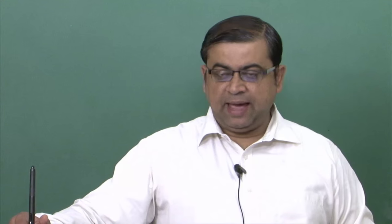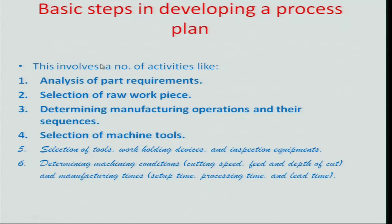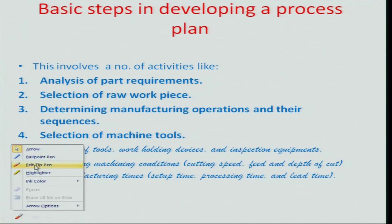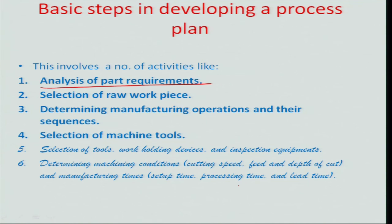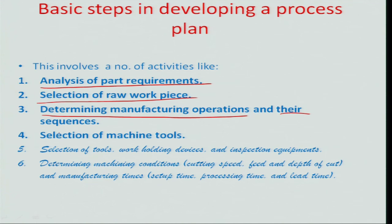We talked about some definitions and then finally started the different steps of the CAPP process. A quick recap: we discussed step 1 through 4 — analysis of part requirements, what it really means in terms of CAPP, the selection of raw workpiece material, determining the operations involved in making the part, and the sequences of those operations — whether drilling is followed by milling or vice versa depending on the part geometry. Those intelligent decisions have to be taken at this step.